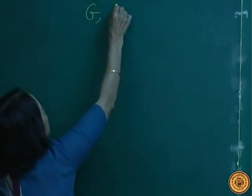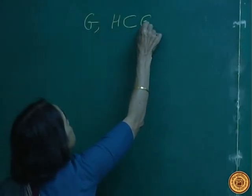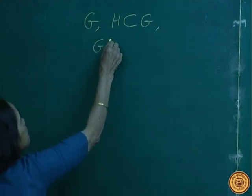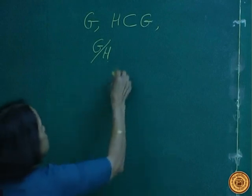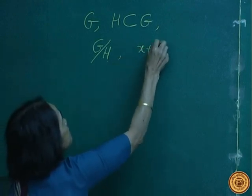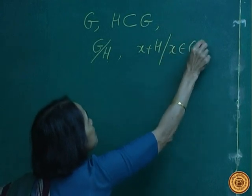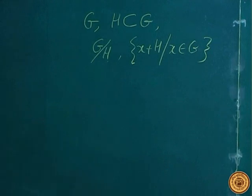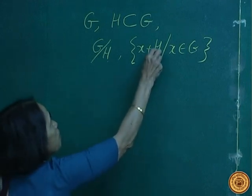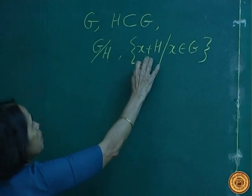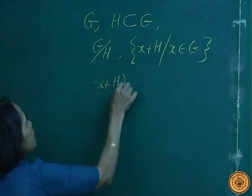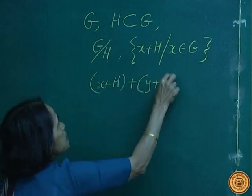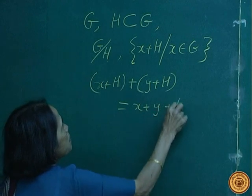If G is a group and H is a subgroup of G, you know how to make the set of cosets of H. If the binary operation is written as addition, then the cosets are x plus H for every x in G. These cosets are mutually disjoint, and they also have a binary operation induced from the operation of G. If the operation is plus in G, then you can define the binary operation on the cosets as x plus y plus H.